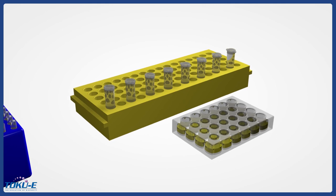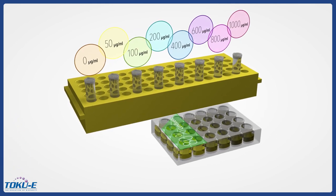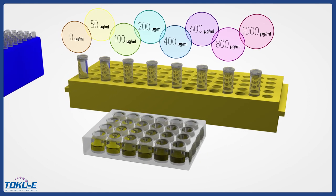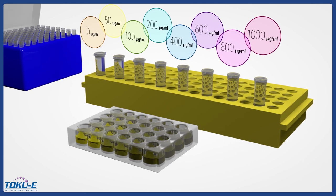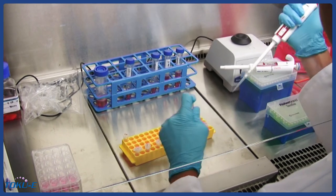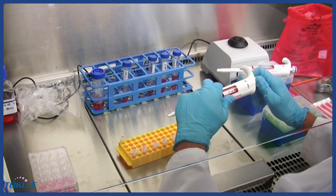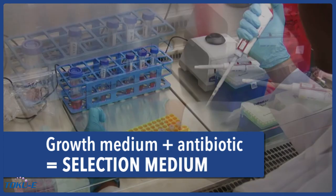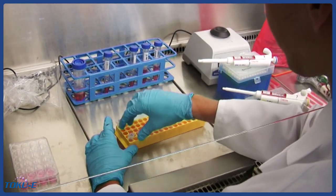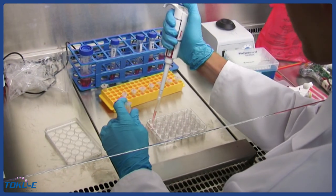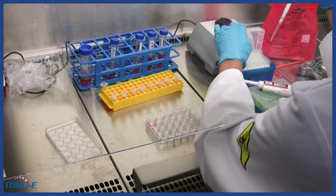The day after seeding, we will add the selection antibiotic at 8 different concentrations to the 8 wells with 80% confluency. For G418 disulfate and our CHO cells, we will use 8 different concentrations from 0 to 1000 micrograms per milliliter. This concentration range will vary depending on the type of selection antibiotic and cell lines used. Prepare 8 microtubes containing 500 microliters of culture medium and each of the 8 different antibiotic concentrations. The growth medium containing the selection antibiotic is called a selection medium. Vortex each of the 8 tubes. Remove the medium from each of the 8 wells in the 24-well plate and replace it with 500 microliters of each of the 8 selection medium concentrations to the corresponding 8 wells.